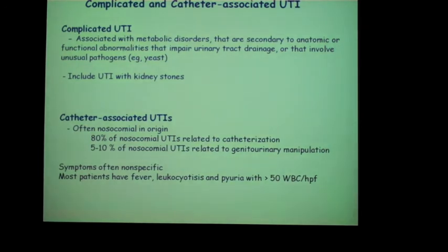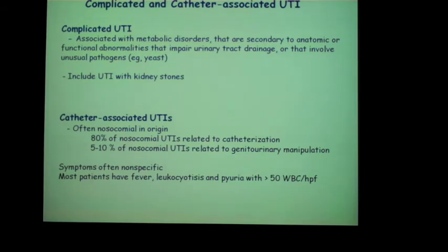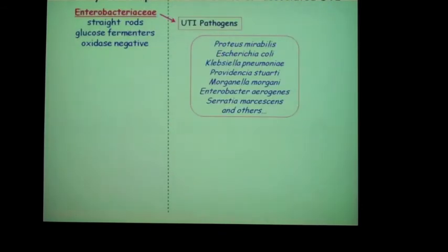Moving to complicated and catheter-associated UTIs — these are what you would see in the hospital or in people who have underlying disorders, and they are harder to diagnose and manage. Catheter-associated UTIs are a huge problem in the hospital and are hard to diagnose because symptoms are vague: fever, leukocytosis, and white blood cells in the urine, while the patient has other problems as well.